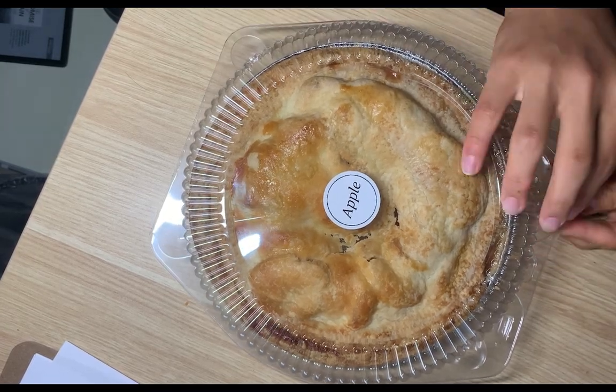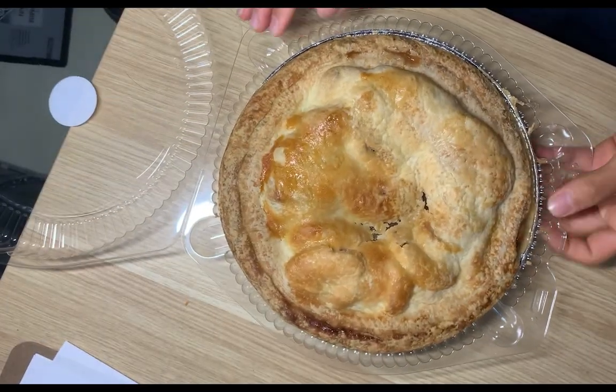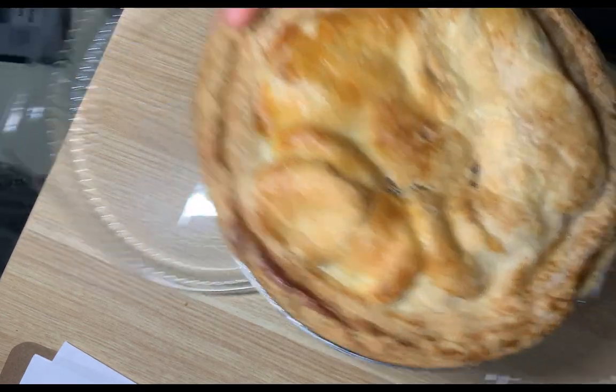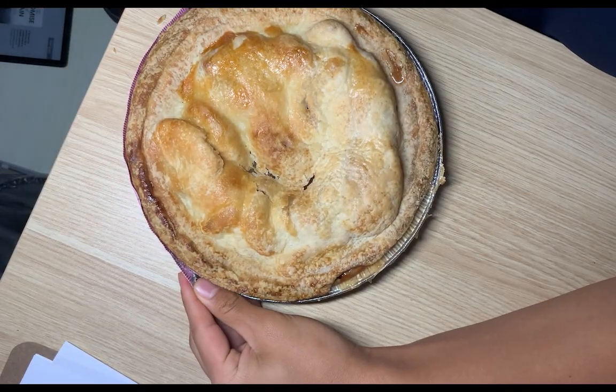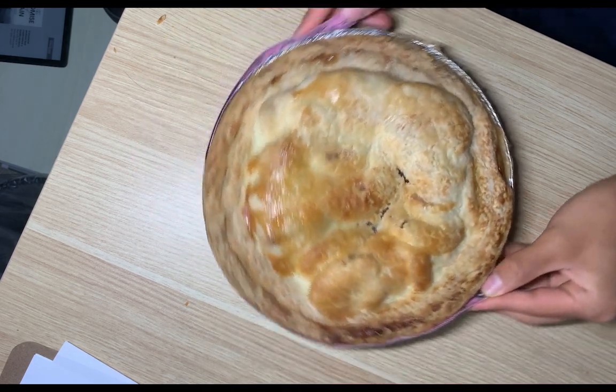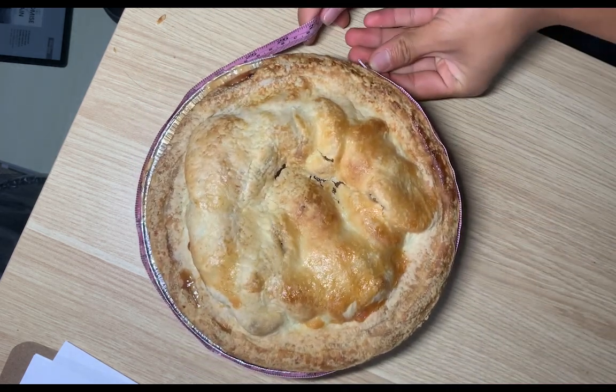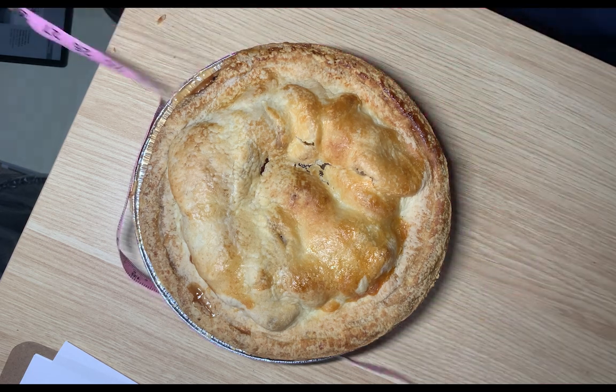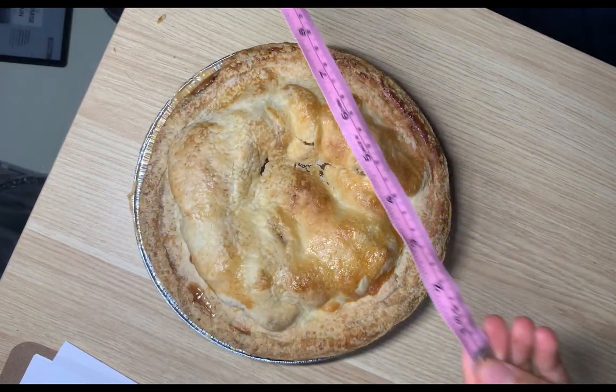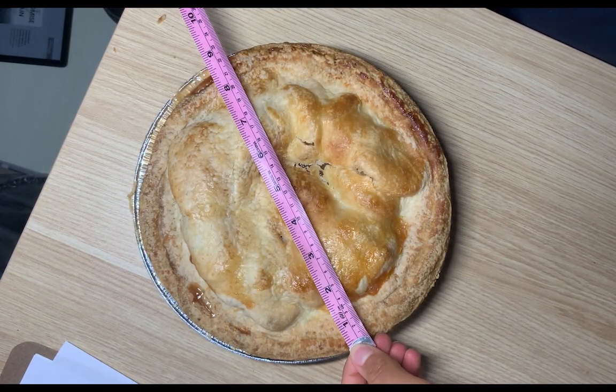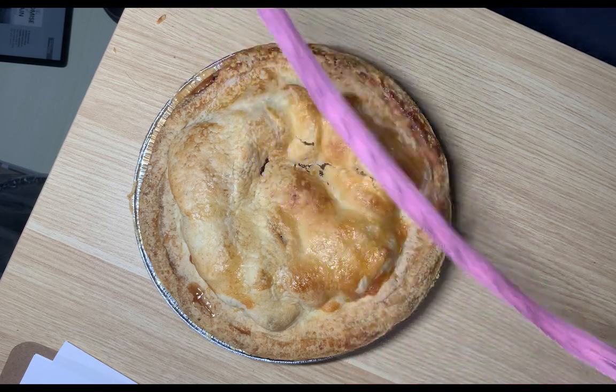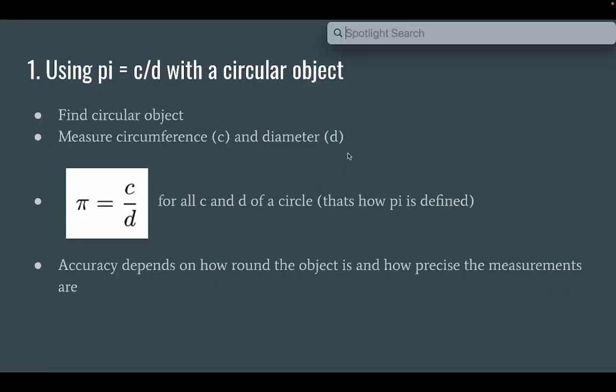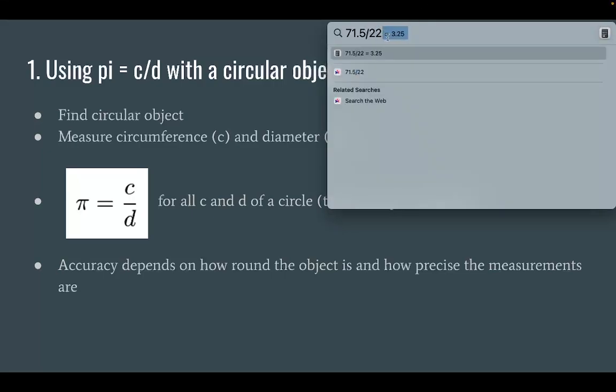So we get a circular object, which in my case is a pi. And then we measure its circumference. We just wrap it around, see what number we get. This is around 71 and a half inches. And then we measure the diameter, which is around 22 centimeters. Dividing these numbers, we can see that our estimate for pi is 3.25, which isn't that good, but it could be better if we used a better measuring tool.